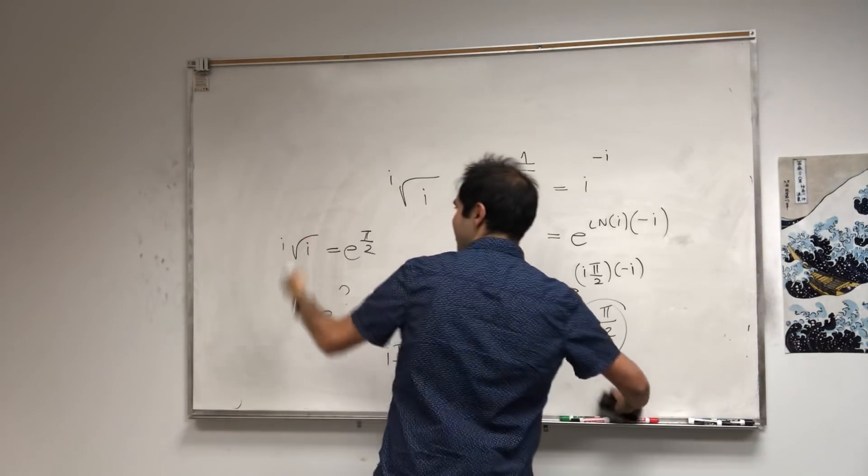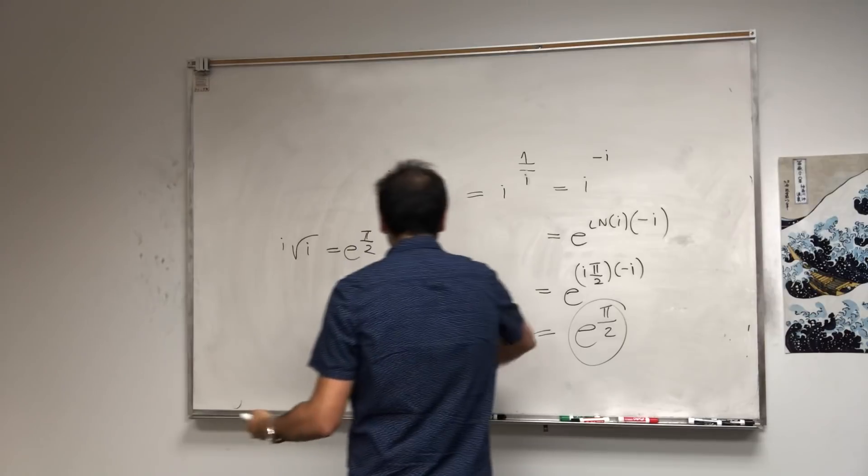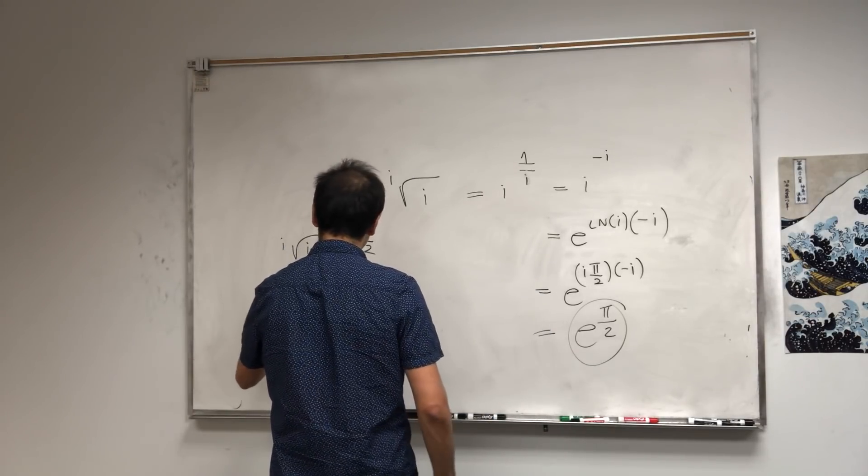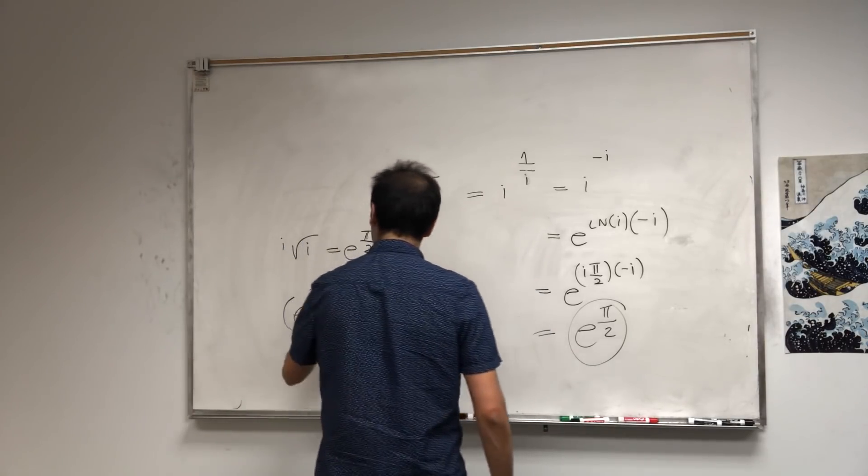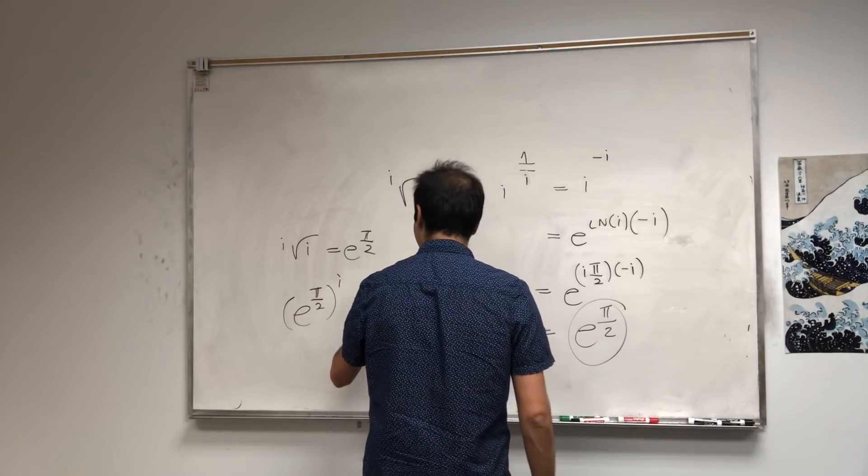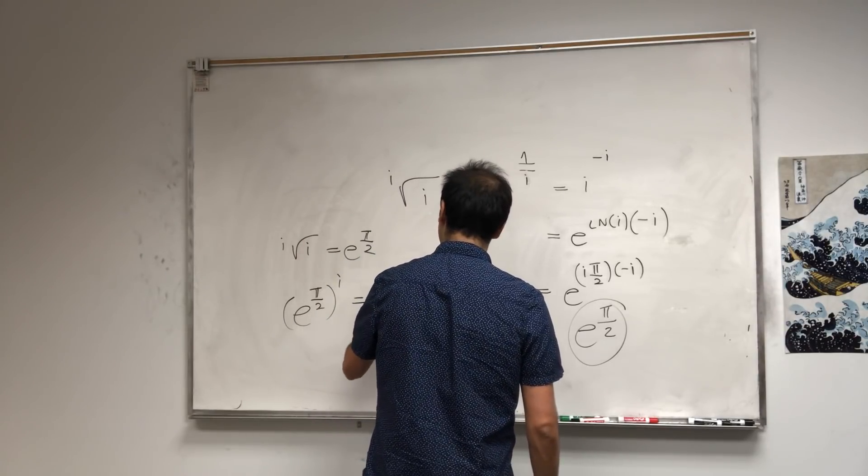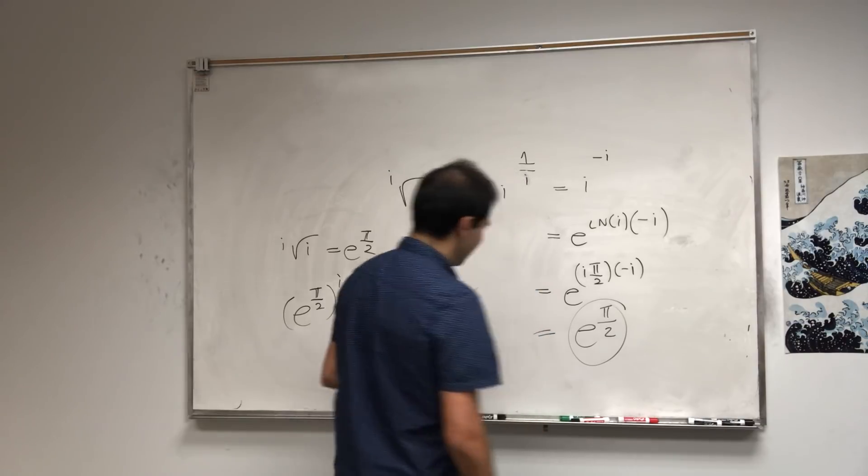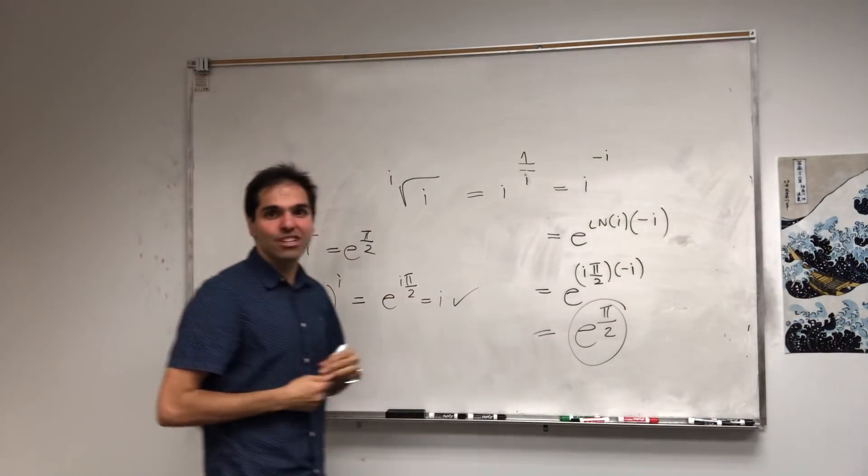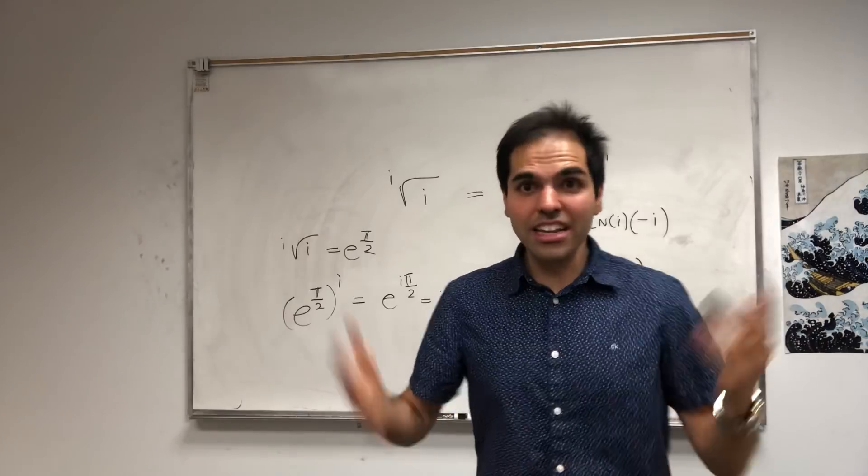And it makes sense because if you raise e pi over 2 to the i-th power, you should get i, and this is precisely true. But still, how cool is that? The imaginary root of an imaginary number is real.